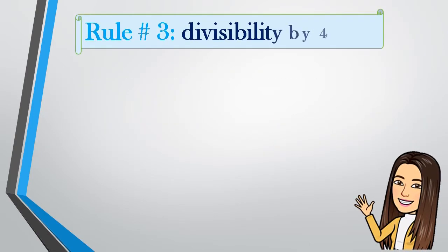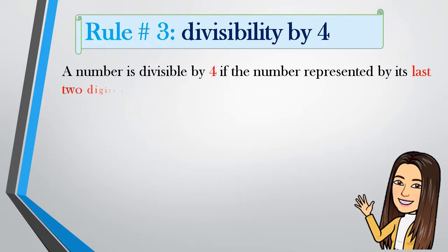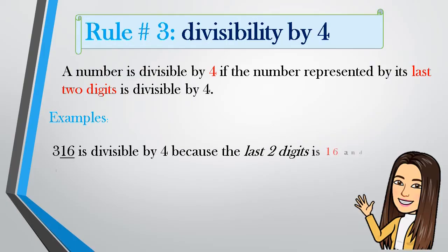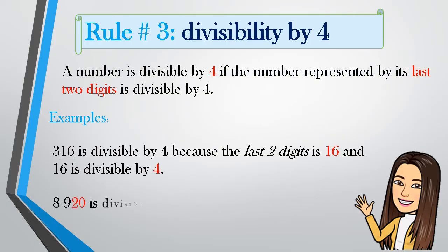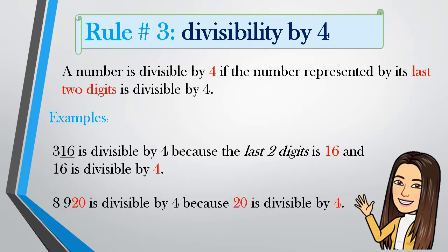Rule number 3: Divisibility by 4. A number is divisible by 4 if the number represented by its last two digits is divisible by 4. Example: 316 is divisible by 4 because the last two digits, 16, is divisible by 4. Another example: 8,920 is divisible by 4 because the last two digits, 20, is divisible by 4.